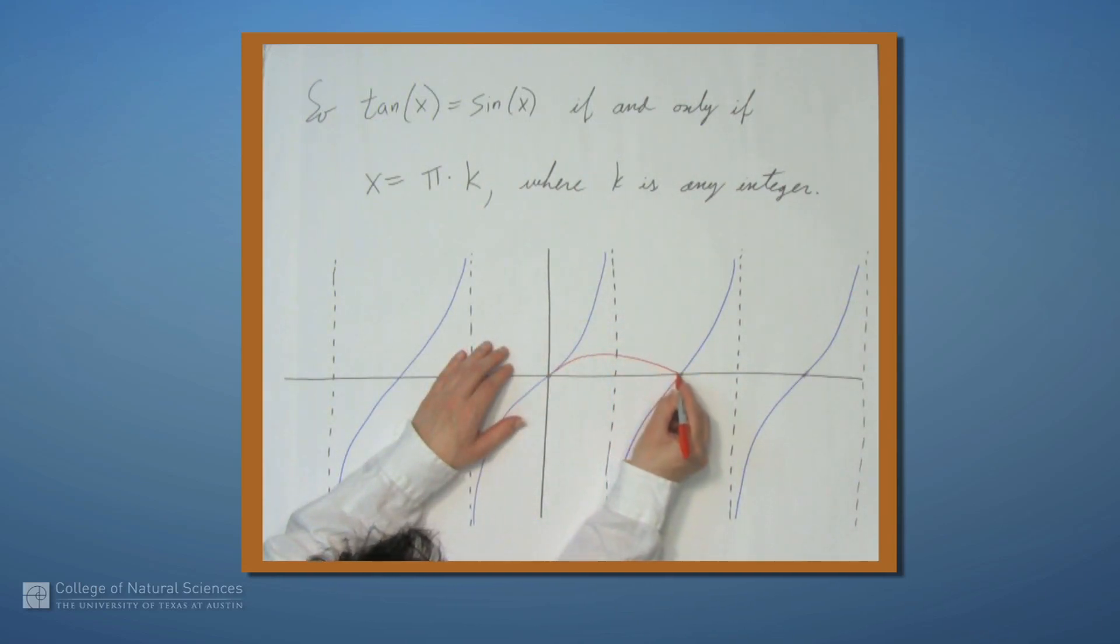So it's going to go like this, and then it's going to come down, come back up, just touch tangent, and then go off again like that. And similarly in this direction, it's going to go like this.